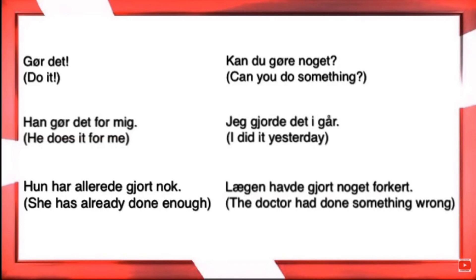'Han gør det for mig.' This is a little funny because it's actually the same form as the imperative — some verbs share the same spelling. 'Han gør det for mig' — he does it for me, or he's doing it for me. Don't worry about present continuous — that's an English problem, not in Danish.